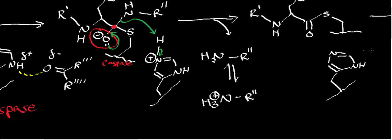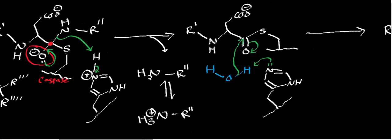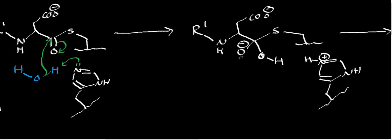Now we have the regenerated resting state of the histidine residue, and we're ready for another deprotonation. The molecule we're going to deprotonate is water. The lone pair on the histidine attacks a proton on water, deprotonating it, and the electrons between the proton and the oxygen attack this carbonyl carbon, generating a second tetrahedral intermediate. That intermediate quickly collapses — the lone pair on the alkoxide reforms the pi bond and kicks off the best leaving group, which is the cysteine residue. Cysteine leaves and picks up the proton from the histidine, regenerating the resting state of the histidine.